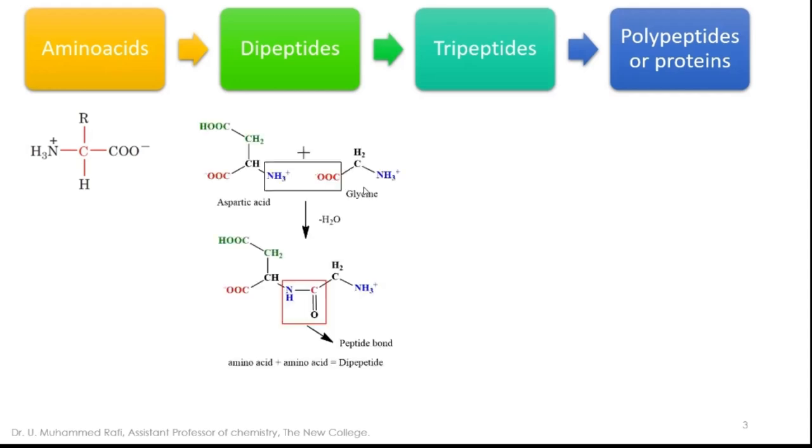These amino acids will combine together to form a dipeptide. Now we have taken an example of aspartic acid and glycine. When they combine together, a water molecule is removed and amide linkages are formed. Double bond N-H is an amide linkage, but here we call it a peptide bond. So a peptide bond is formed. One amino acid and another amino acid combined together form a dipeptide.